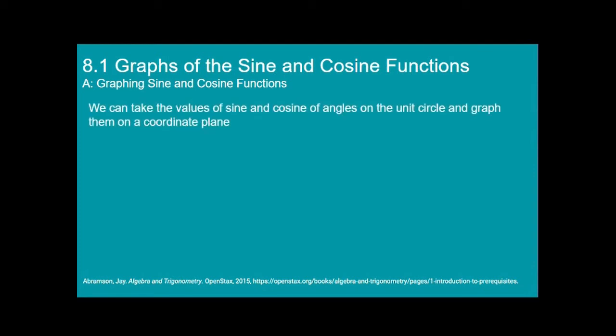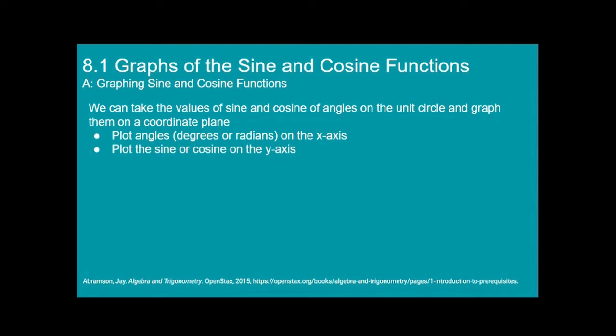We can take the values of sine and cosine of angles on the unit circle and graph them on a coordinate plane. What we're going to do is take the values of the angles, whether in degrees or radians, and plot that on the x-axis, then plot the sine or the cosine on the y-axis.